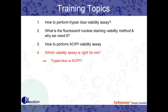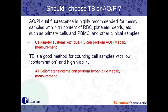So in conclusion — which viability assay is right for me? Should I use Trypan Blue? Should I use AOPI? Should I use both? The AOPI dual fluorescent assay is highly recommended for messy samples with high content of RBC, platelets, or debris. Some examples of these primary cells we saw today are fresh primary cells, PBMCs, splenocytes, bone marrow, tumor digest, and other clinical samples.